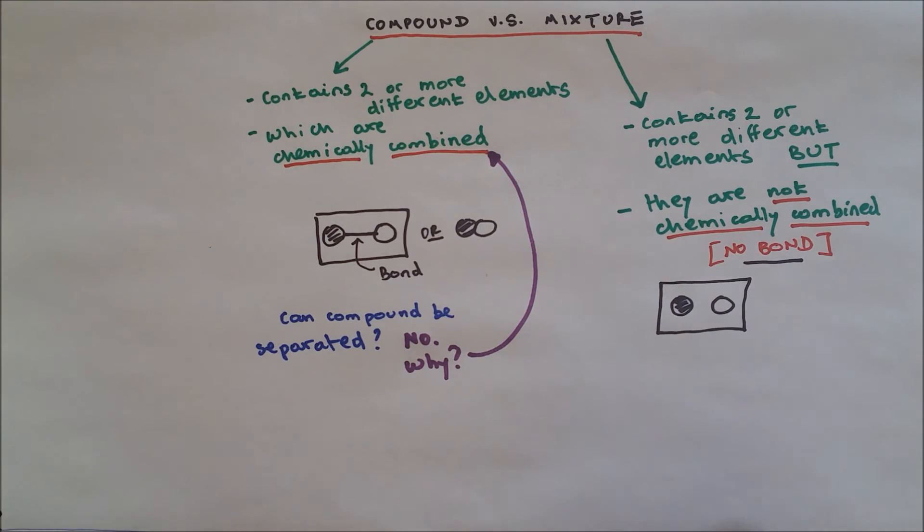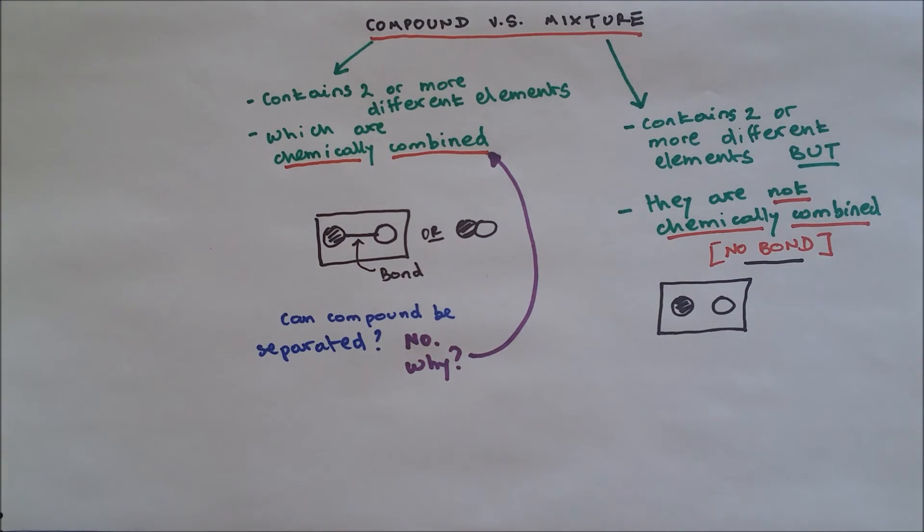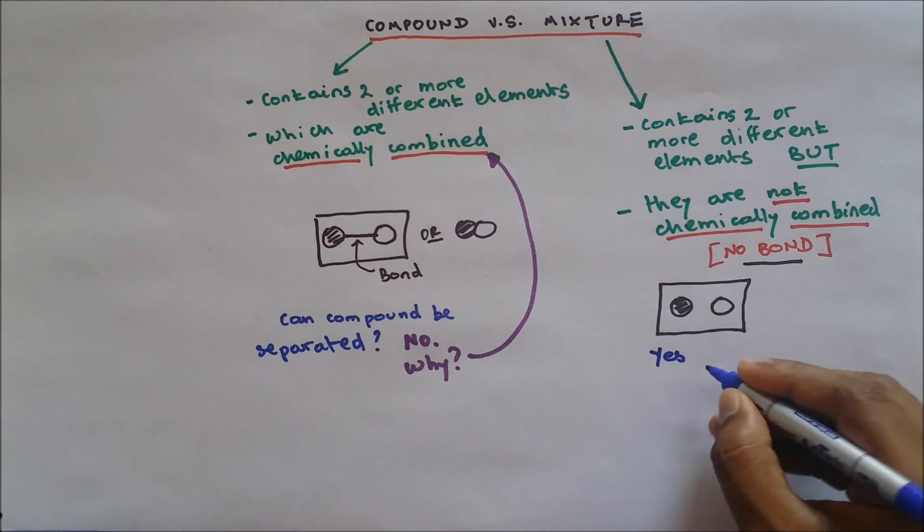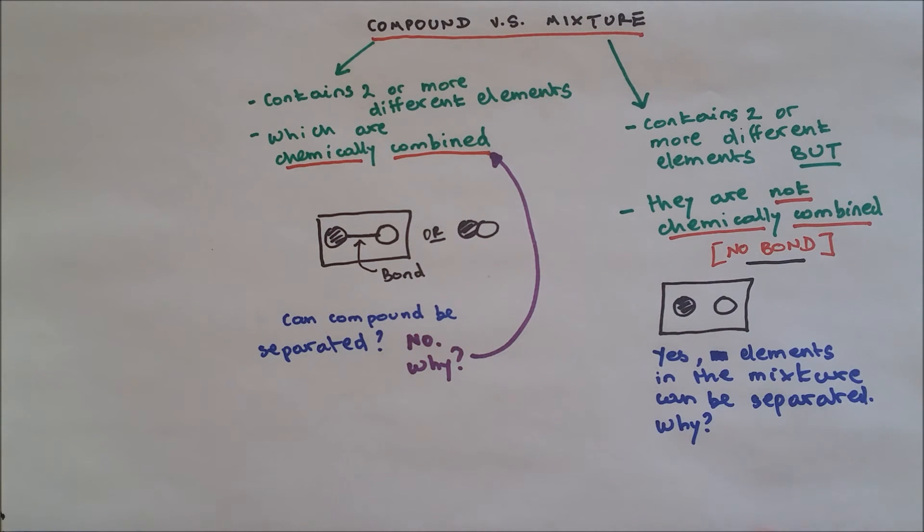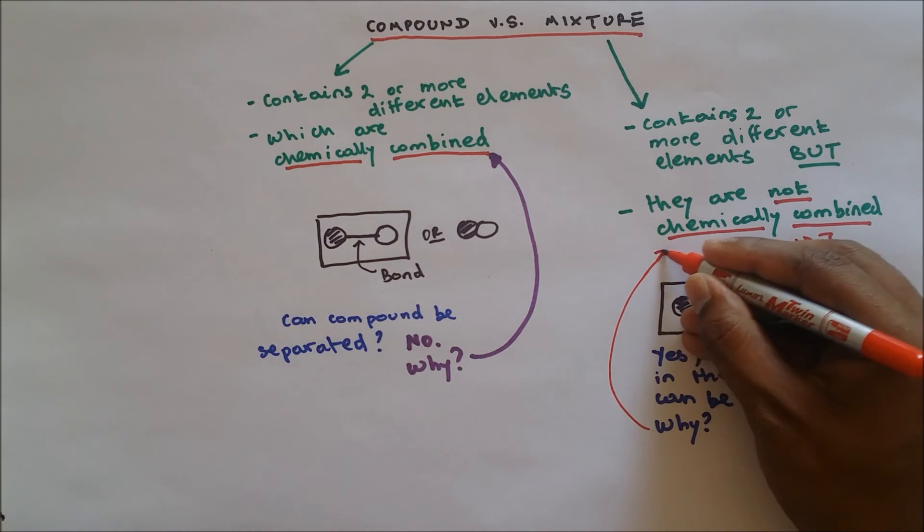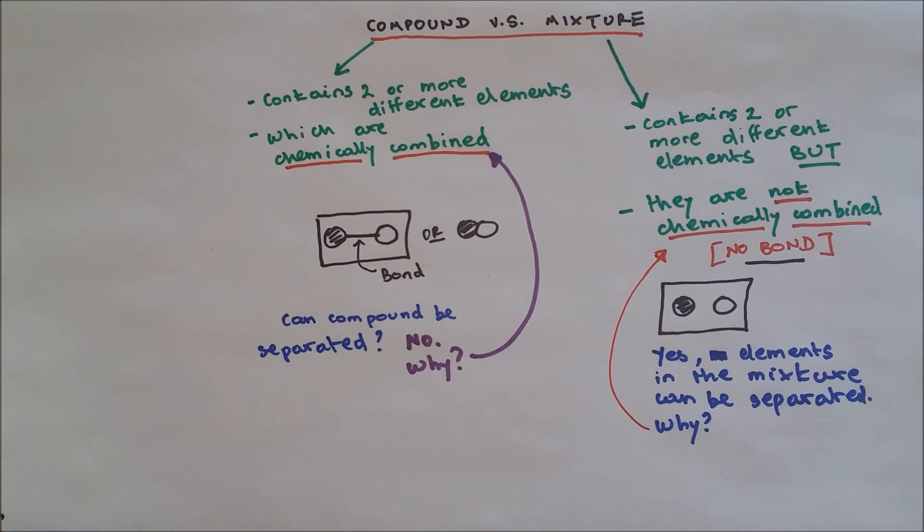If I ask the same question for a mixture: Can mixture be separated? Yes, it can be separated. Why? Because they are not chemically bonded. So it can be separated by physical method.